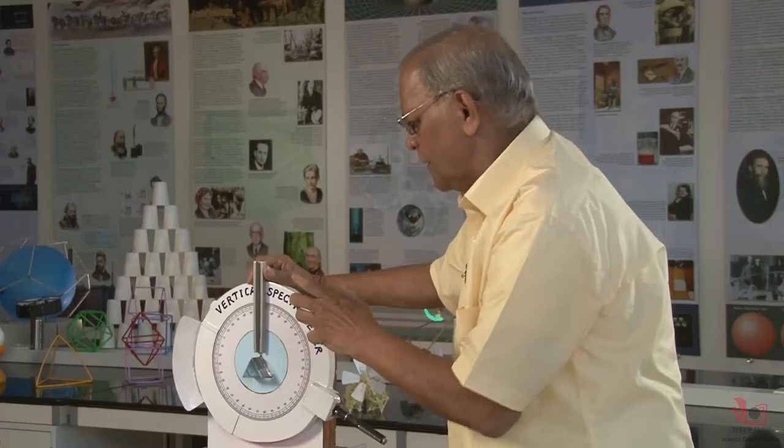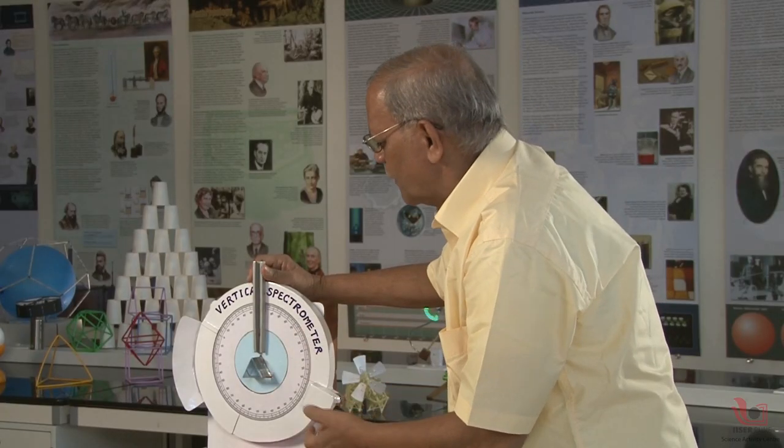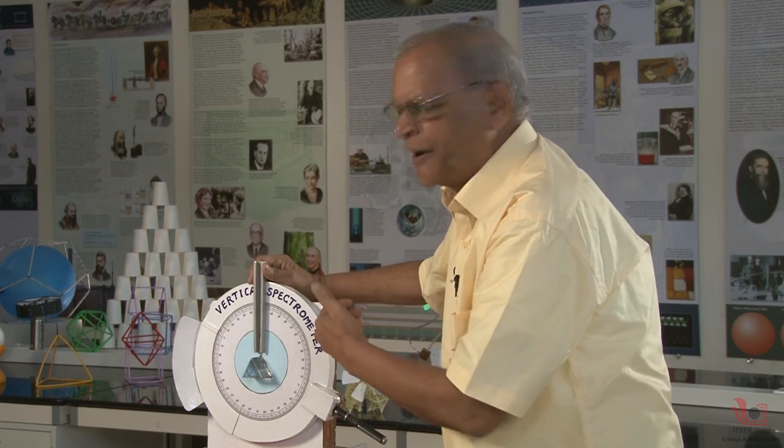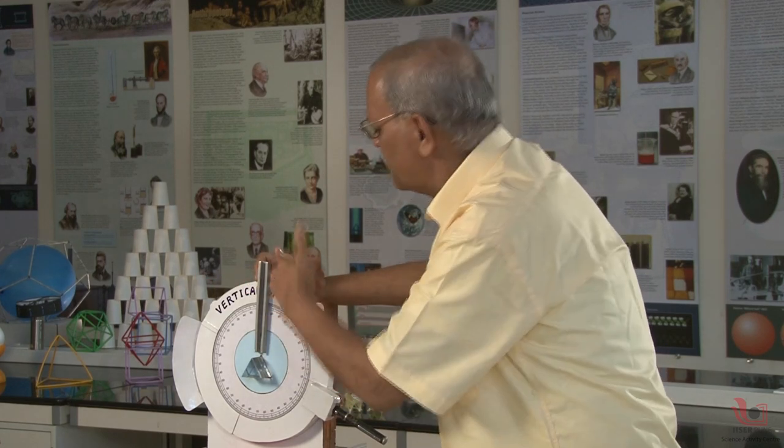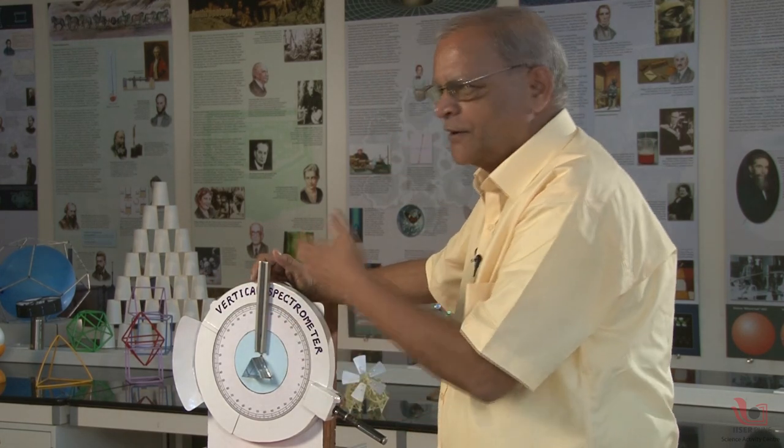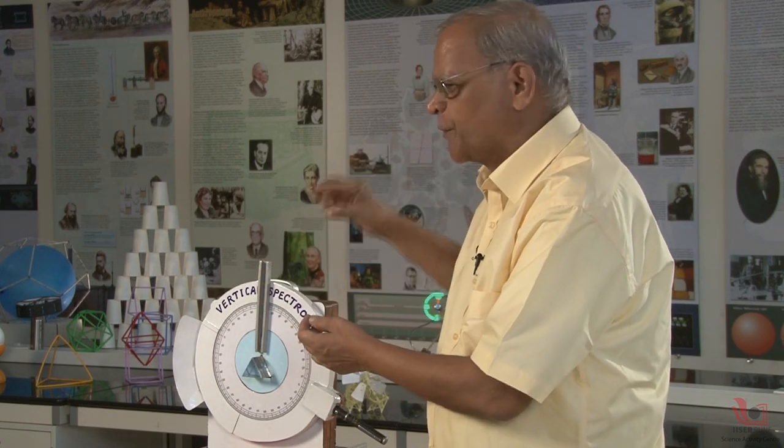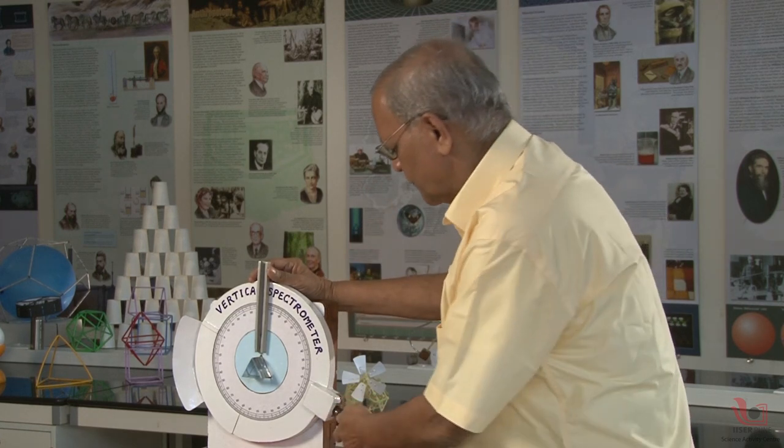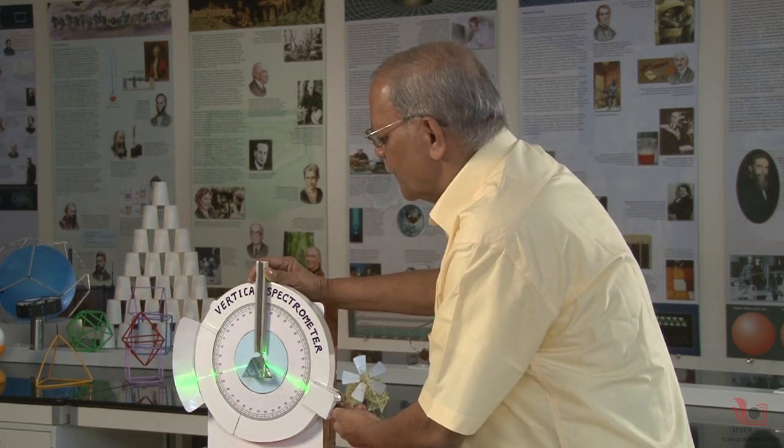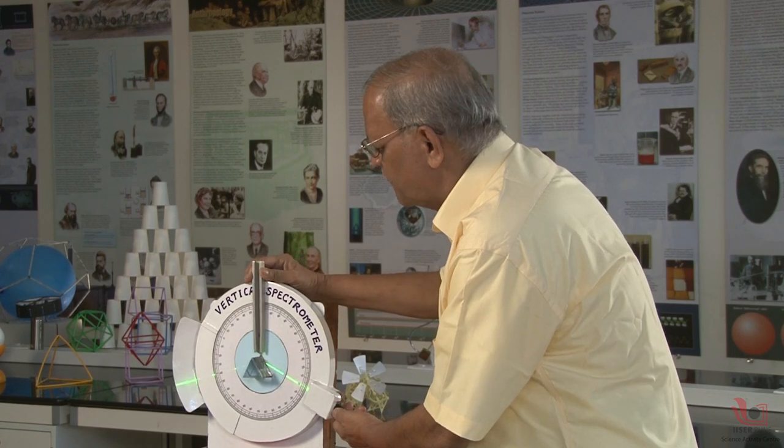It is a simple modification of the spectrometer-like instrument. I named it vertical spectrometer because in the lab, the spectrometer is horizontal. There is a light source, collimator, prism table, and telescope, and only one eye can observe at a time. But here, we can observe this phenomenon in a very simple way.